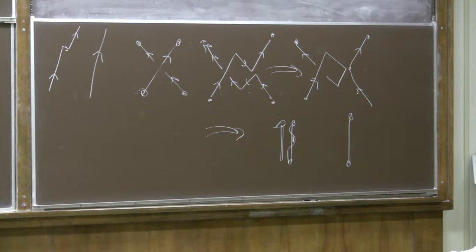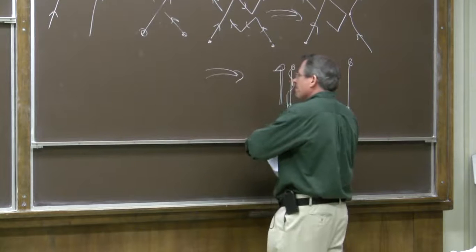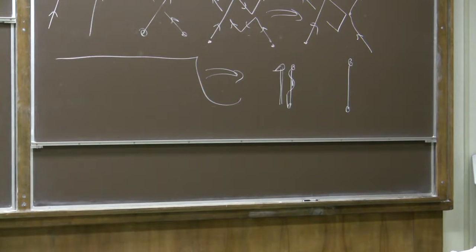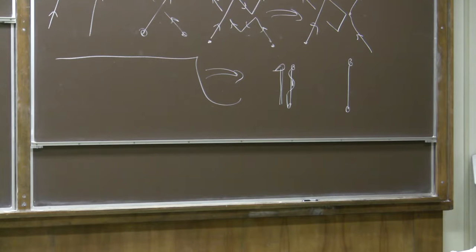Now, how are we going to use this? We want to understand quantum gases. We want to consider many orbitals, each of which can have some occupation number. If they're bosons, the occupation number can be any non-negative integer; if they're fermions, it can only be zero or one.